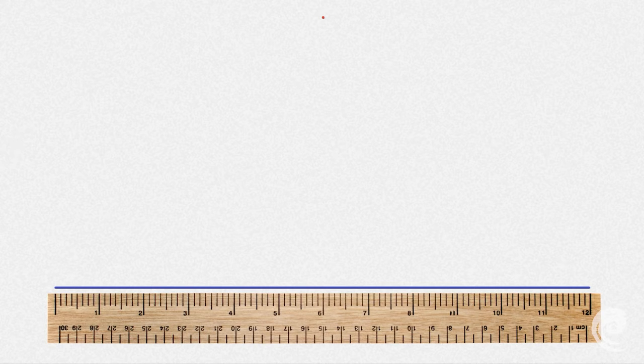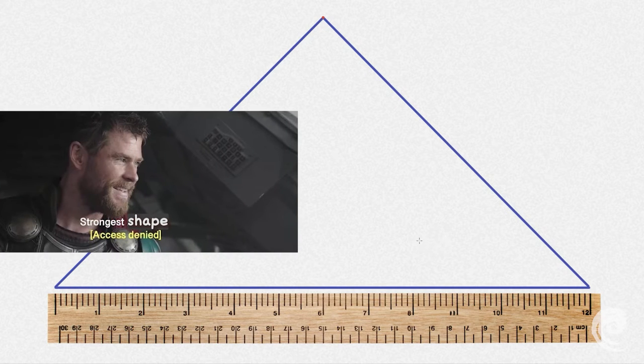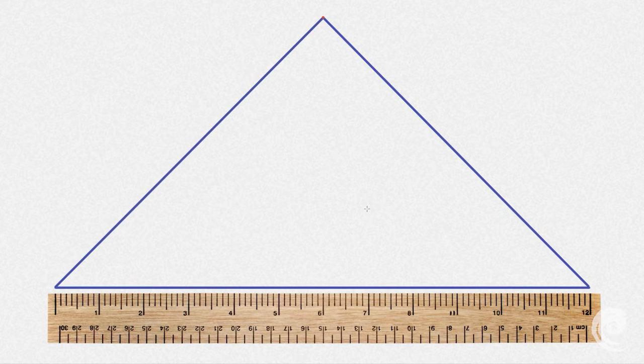Then I'm going to connect the ends of my lines to the vanishing point with some orthogonal lines, and now I have a big triangle. Yay.